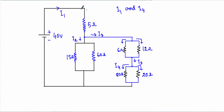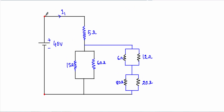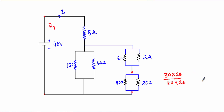To calculate source current I1, I need the total resistance RT with respect to the two terminals. Starting simplification from the right side: the 80 ohm and 20 ohm resistors are in parallel. Their equivalent resistance is 80 × 20 divided by 80 + 20, which equals 16 ohm. I can replace those two resistors with a single 16 ohm resistor.